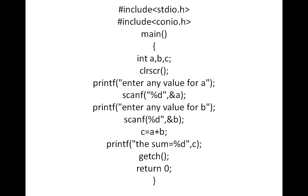Then printf("enter any value for b"), followed by scanf("%d", &b). After that, c = a + b — here '=' is the assignment operator and '+' is the arithmetic operator. getch() is a function declared in conio.h, the console input/output header file, which waits for a keypress from the keyboard.